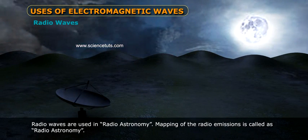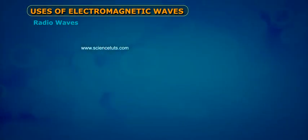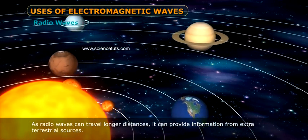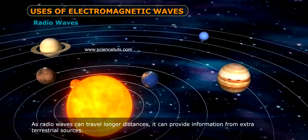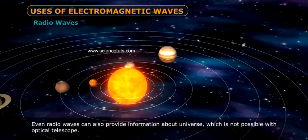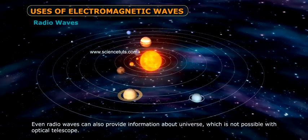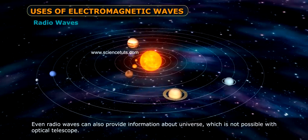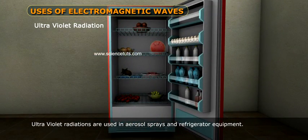Radio waves are used in radio astronomy. Mapping of the radio emissions is called radio astronomy. As radio waves can travel longer distances, they can provide information from extraterrestrial sources. Radio waves can also provide information about the universe, which is not possible with an optical telescope.